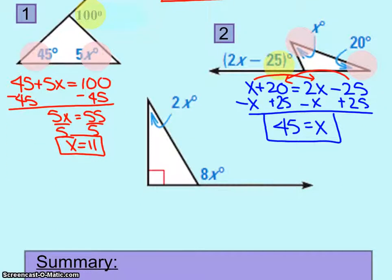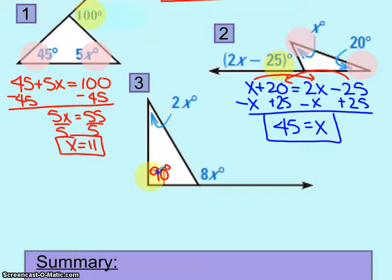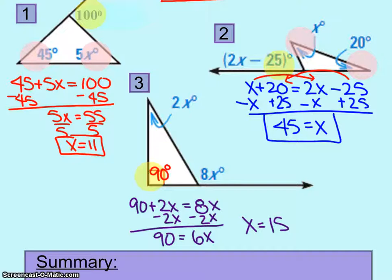We have one last problem, question number three. When you look at this question, the only thing that is different is that we have this box in the corner — and what do we mean when we see that little box? That's the implied 90 degrees. Pause the video, set this up and solve it, then we'll check your work. I set it up by taking 90 and 2x, putting those two together, equaling it to 8x on the right, and getting x equals 15.